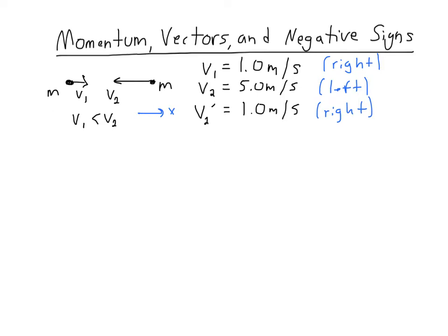And I specified my coordinate system like this. So as vectors, the momentum of V1 is going to be positive, the momentum of V2 afterwards is going to be positive, but the momentum of V2 at the beginning is negative.